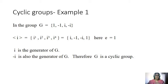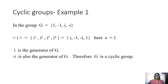What about -i? The powers of -i also give the same elements. So -i is also a generator of this group G. This group G is a cyclic group since it has generators i and -i.